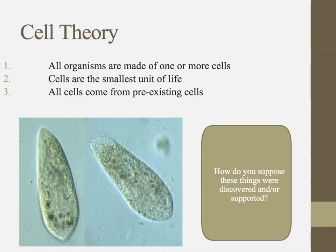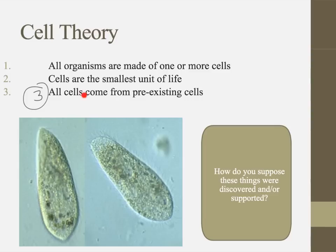Perhaps one of the most interesting parts of the cell theory is number three: all cells come from pre-existing cells. People once believed in a process called spontaneous generation — that living things just arose spontaneously from nowhere. So maggots, for example, grow on dead flesh, and people used to assume that meat just grew maggots. Throughout a series of investigations, we've now realized that's a silly way of thinking — new cells come from pre-existing cells.